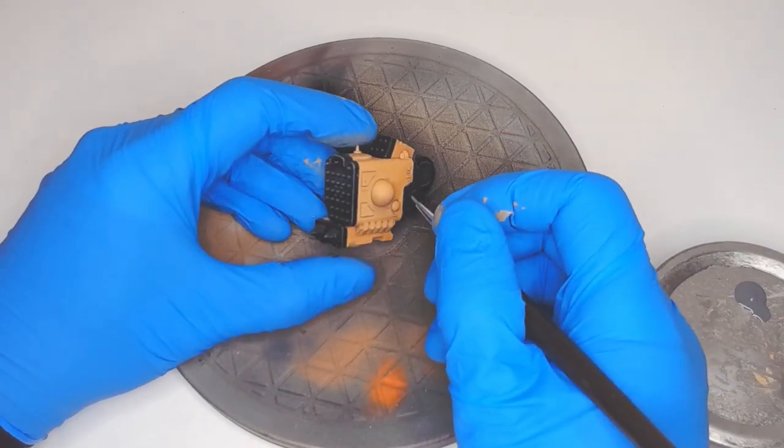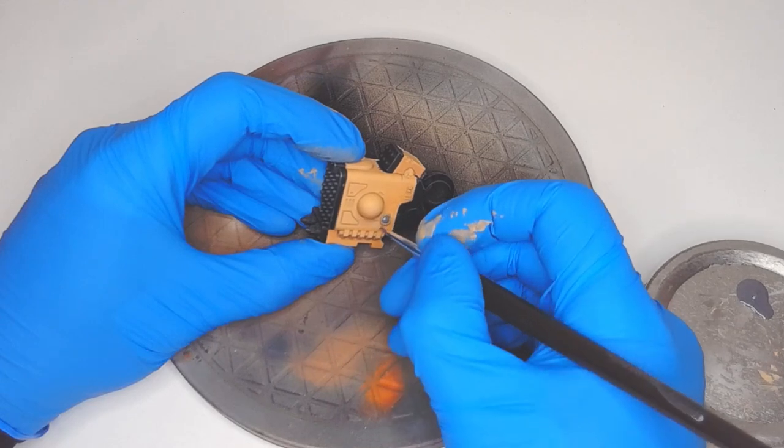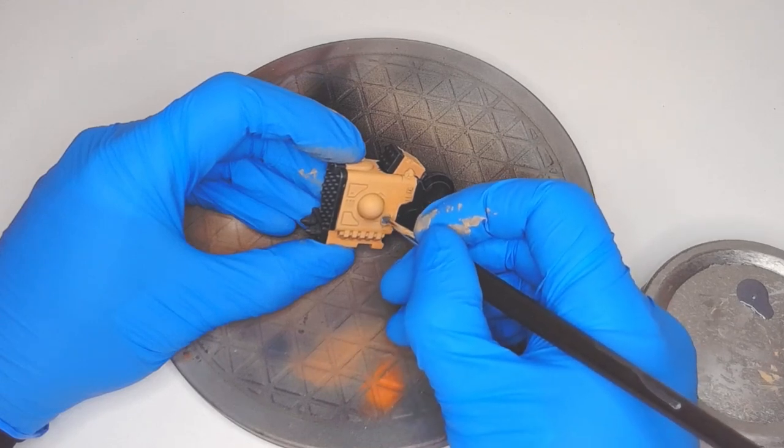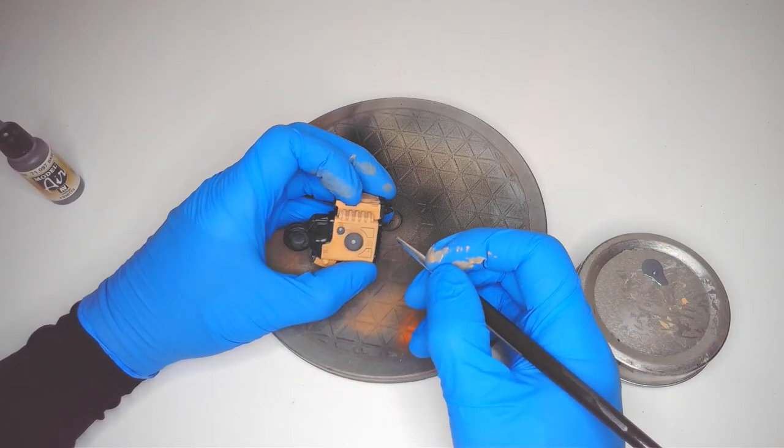And now I can do some relaxing brush work on all the various fairings, rivets, domes, and sensors, etc. I'm using Vallejo Model Air Base Gray again, and as I mentioned before, it brushes very well.